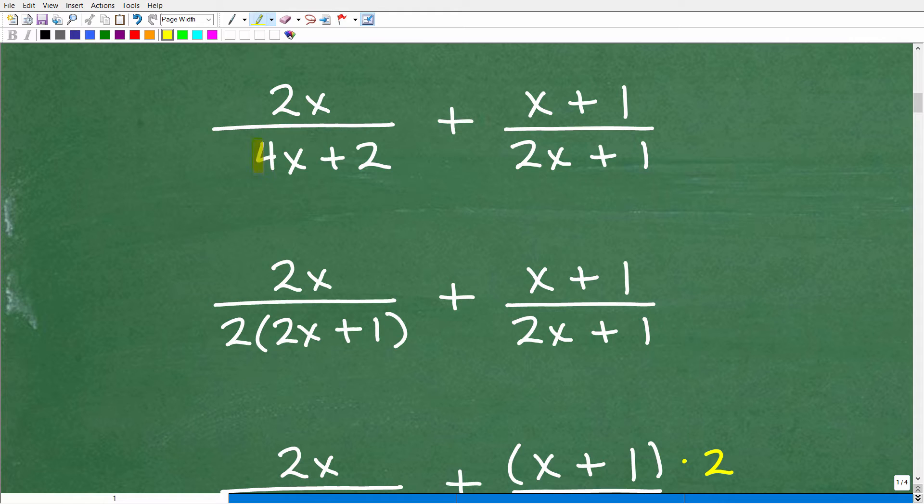Alright, so the first thing is we could see here that our denominators are not the same. So let's go ahead and find the LCD. How can I find the LCD? Well, I could factor this denominator, 4x plus 2. I could factor out a 2, so that's 2 times 2x plus 1.